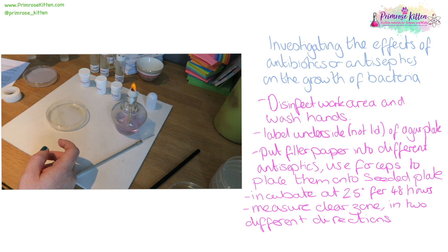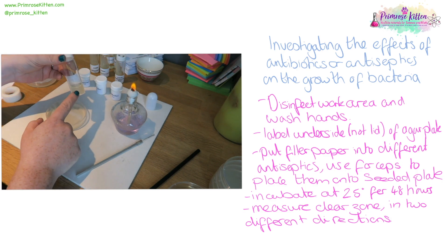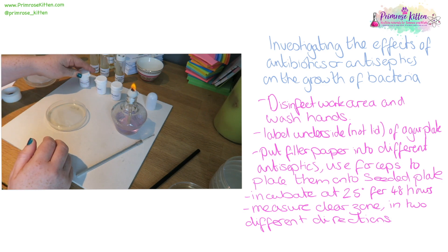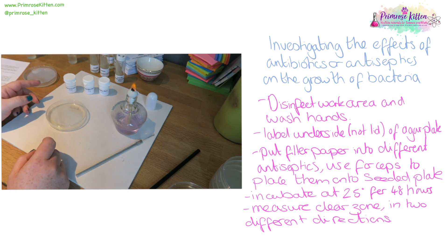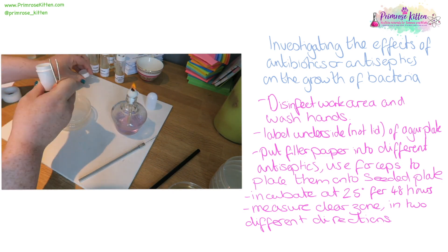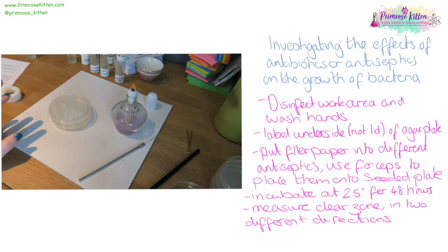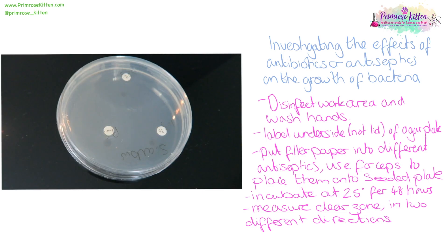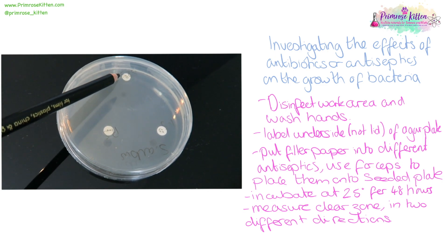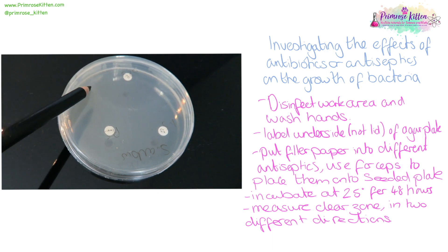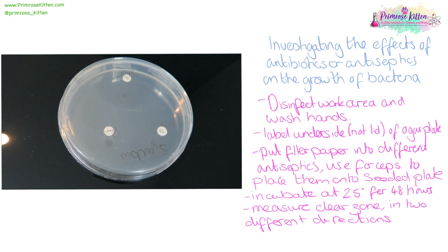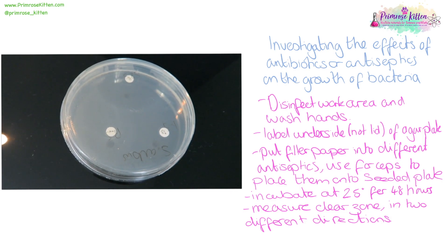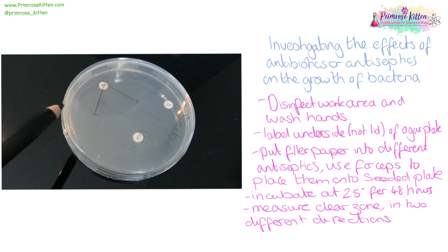When looking at the effect of antibiotics or antiseptics on how bacteria grow, we need to make sure that our work area and our hands are clean. Even though these bacteria are relatively safe to use, we have to assume they're going to be pathogenic. You need to label the underside — not the lid — of the agar plate. These plates will probably already be seeded by the technician. You can put your little filter paper discs on there using forceps, and then incubate them at 25 degrees for 48 hours. We can then measure the clear zones in two different directions — measuring the diameter, or the radius if the clear zone is very large.